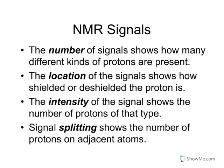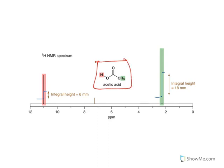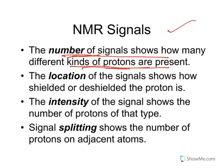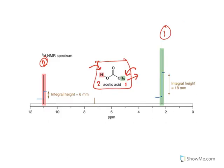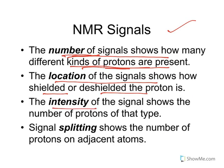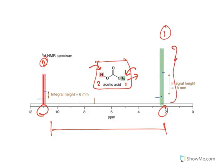NMR signals carry several types of information. First, the number of signals shows how many different kinds of protons are present. For acetic acid, the three CH3 protons are in one environment and the COOH proton is in another, giving two signals. Second, the location of the signals (chemical shift) shows how shielded or deshielded each proton is, reflecting its electronic environment.